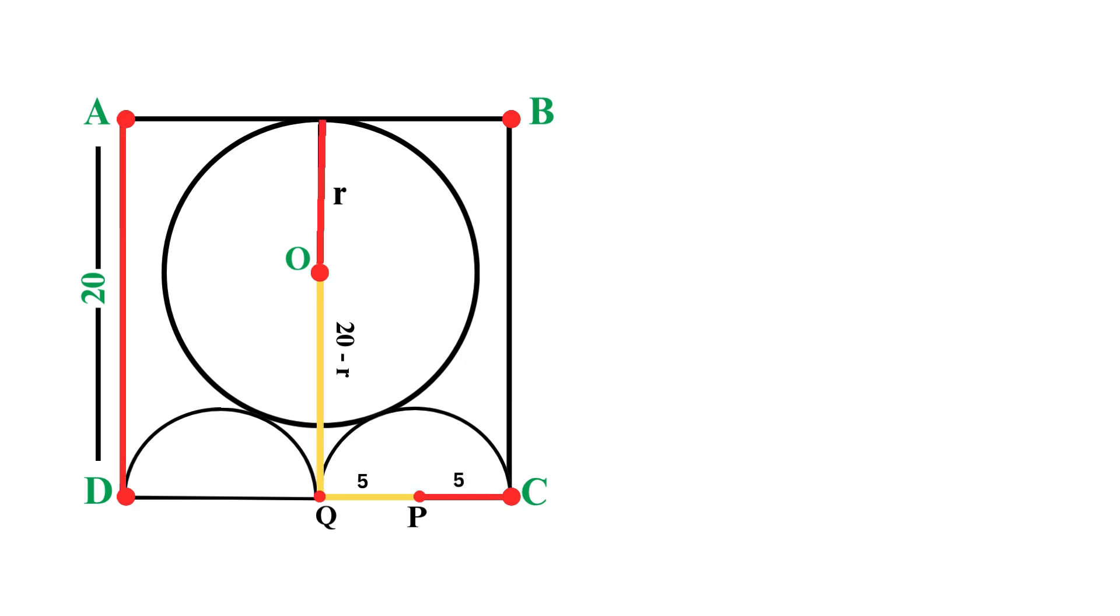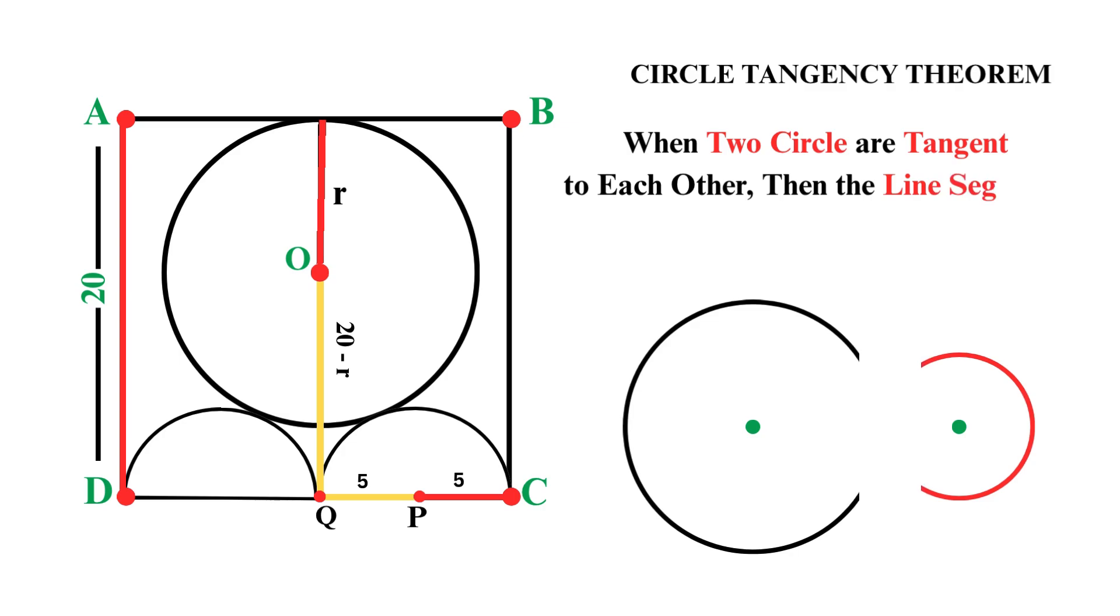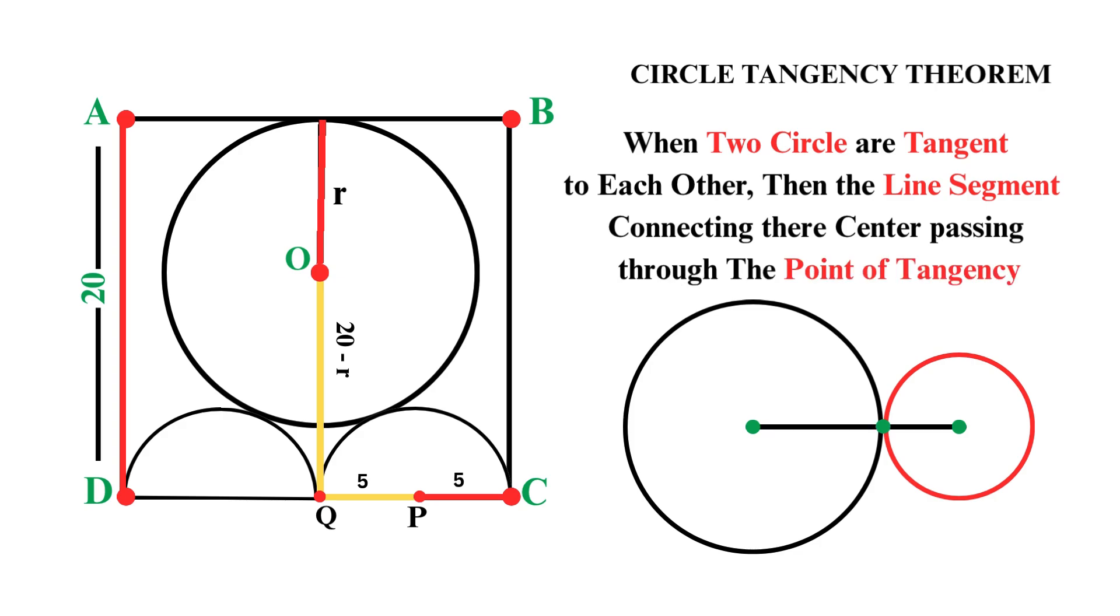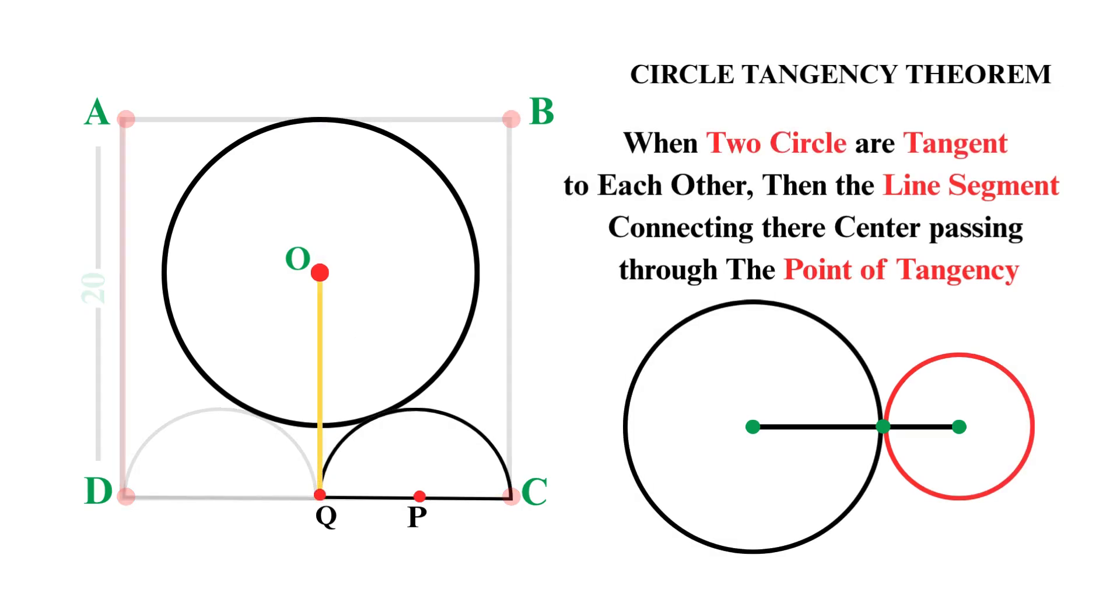Keep this in mind as we'll use it shortly. Now, we're going to apply a fundamental theorem in geometry that is called the circle tangency theorem. And it states that when two circles are tangent to each other, meaning they touch at exactly one point, then the line segment connecting their centers passes through the point of tangency. Let's apply this to our situation. Since we know that our large circle and the right semicircle are tangent to each other, the line segment OP connects their centers. Then, according to our theorem, this line must pass through the point of contact.